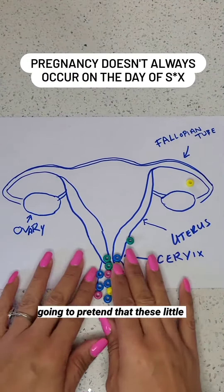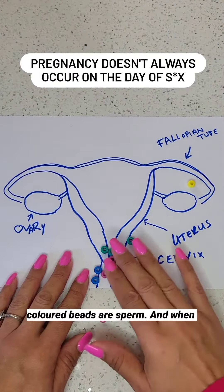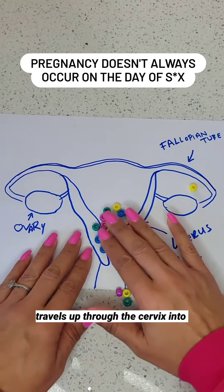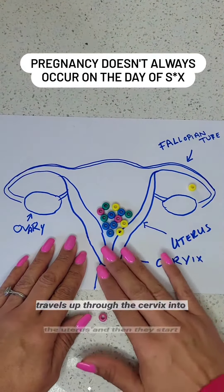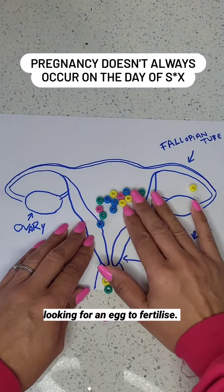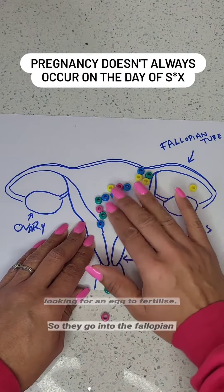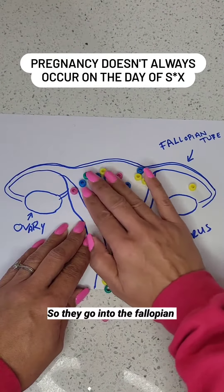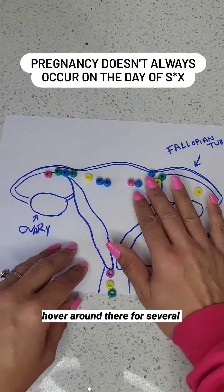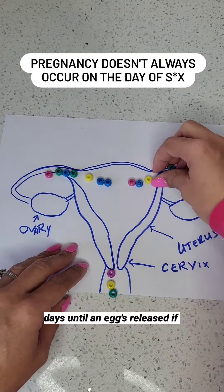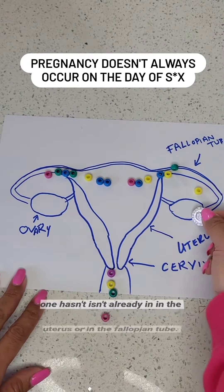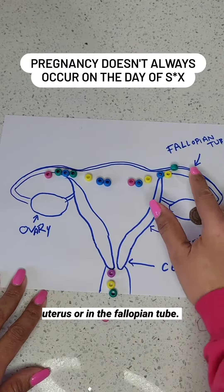We're going to pretend that these little coloured beads are sperm, and when ejaculation occurs, the sperm travels up through the cervix into the uterus and then they start looking for an egg to fertilise. So they go into the fallopian tubes and they'll just sit and hover around there for several days until an egg is released, if one isn't already in the uterus or in the fallopian tube.